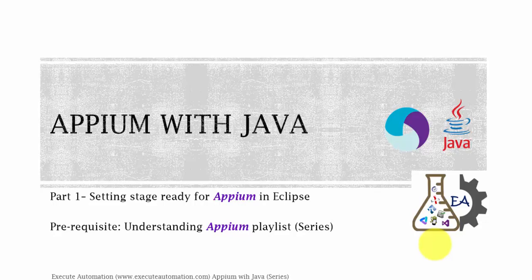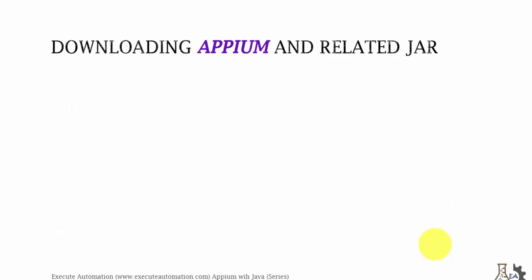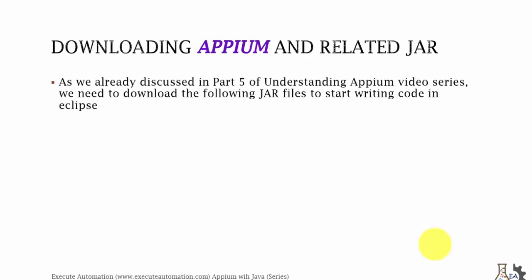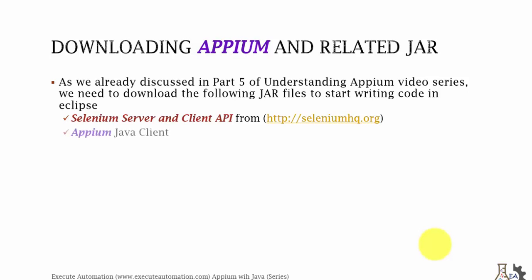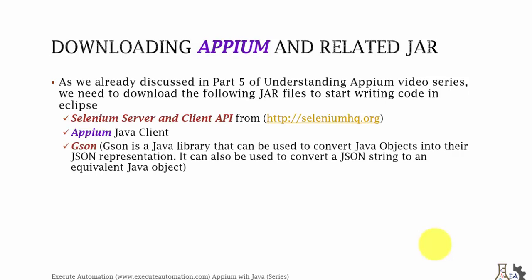Let's get started with downloading Appium and related JAR files. As discussed in Part 5 of the Understanding Appium video series, we need to download the following JAR files to start writing code in Eclipse. Those are the Selenium server and client API JAR files, which you can download from seleniumhq.org. Then we need the Appium Java client JAR file, which is responsible for performing all the operations you are looking for. We also require JSON — a Java library used to convert Java objects into their JSON representation and vice versa.